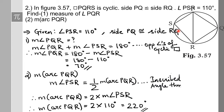Since angle PSR and angle PQR are opposite angles of a cyclic quadrilateral, they are supplementary by the cyclic quadrilateral theorem. So angle PQR plus angle PSR equals 180 degrees. Therefore, measure of angle PQR equals 180 minus 110, which is 70 degrees.